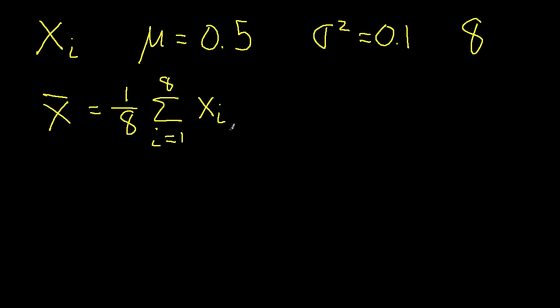So in other words, I'm going to take 8 different observations, I'll add them together, divide by 8, and that gives me the average value of the observation. And suppose I want to know, what's the probability that x-bar is less than 0.75?